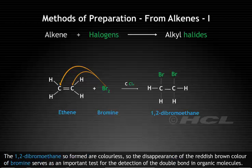The vicinal dibromides so formed are colorless, so the disappearance of the reddish-brown color of bromine serves as an important test for the detection of the double bond in organic molecules.